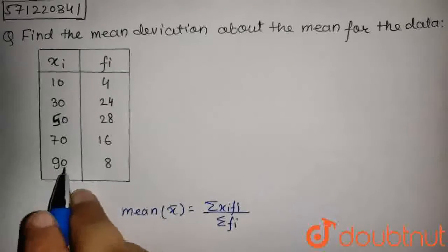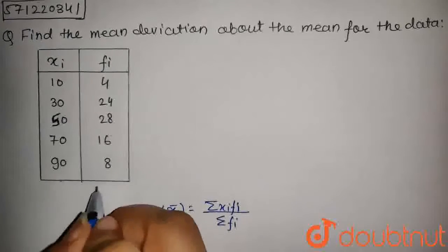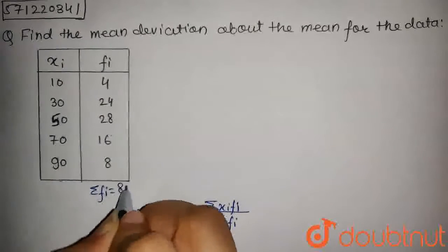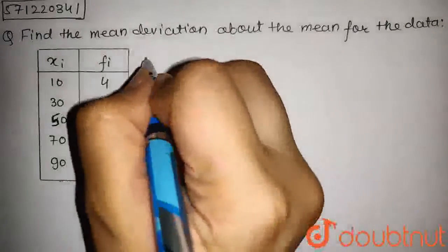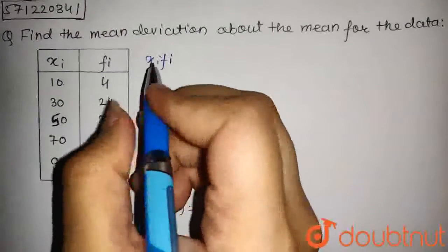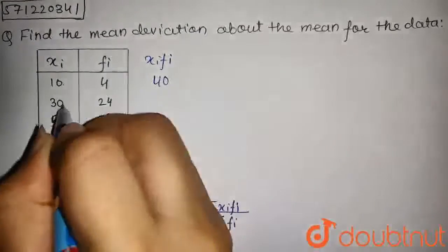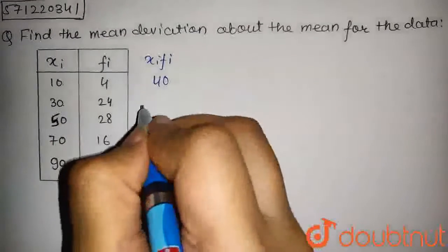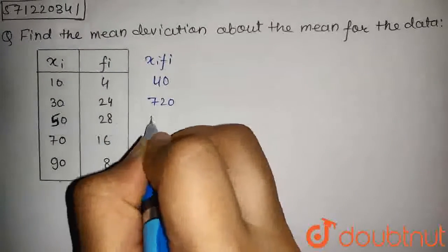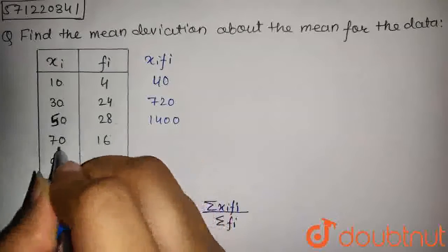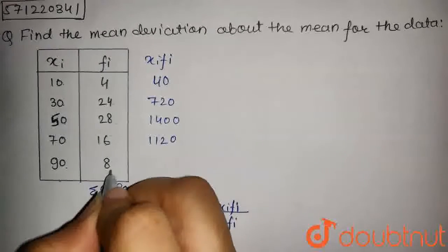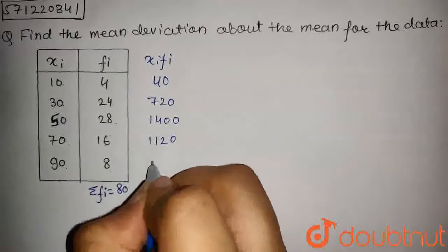We have given xᵢ and fᵢ. The summation of fᵢ, that is summation of frequency, will be equal to 80. The xᵢfᵢ values are the multiplication of these two: 10 into 4 is 40, 30 into 24 is 720, 50 into 28 is 1400, 70 into 16 is 1120, and 90 into 8 is 720.